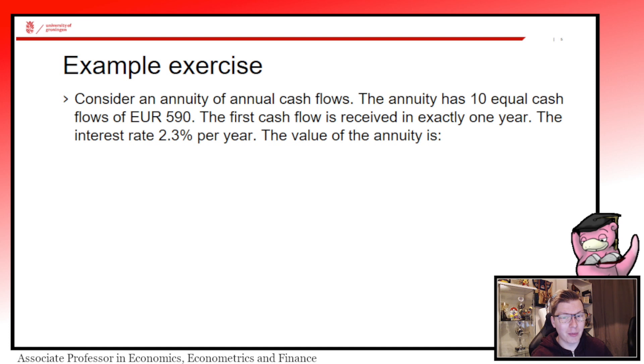Now it's time to give an example of how such an annuity can be calculated. Consider in this case an annual annuity, so you pay a cash flow once a year. The annuity has 10 equal cash flows of EUR 590. The first cash flow is received in exactly one year, so we have no problem with the formula, we have to make no conversions. The interest rate is now 2.3 percent. What's the value of this annuity?